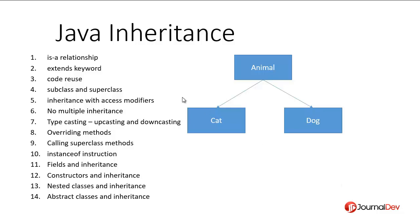Whenever there is an 'is-a' relationship between objects, inheritance can be applied. Java provides the extends keyword to implement inheritance. For example, animal is the base class, and we have cat and dog classes. We know that cat is an animal and dog is also an animal. One of the most important benefits of implementing inheritance is code reuse, because all the properties and methods in animal will be inherited by cat and dog classes.